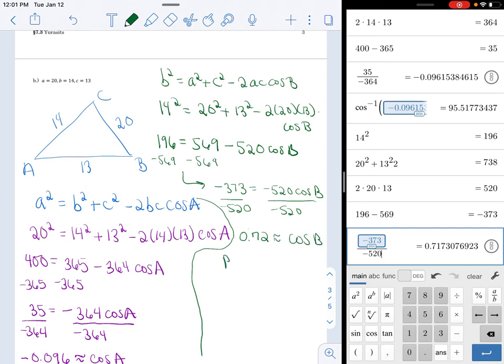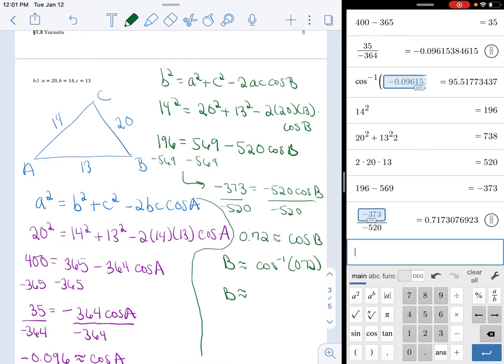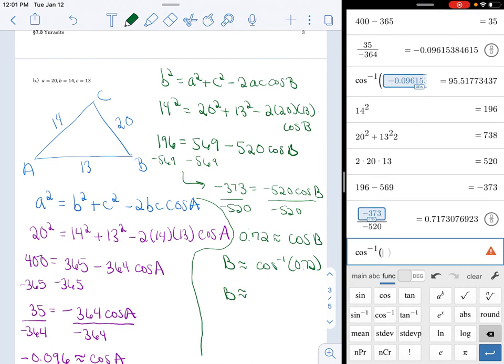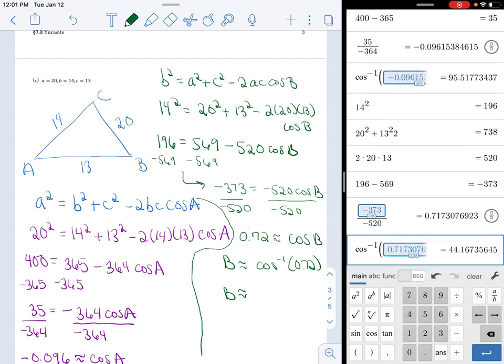So B is approximately cosine B. But I have to solve for the angle, so that's why I'm going to bring in the inverse function. So B is approximately, and what I'm going to do, once again, inverse. I'm going to put the entire answer in there, so I get 44.17 degrees.